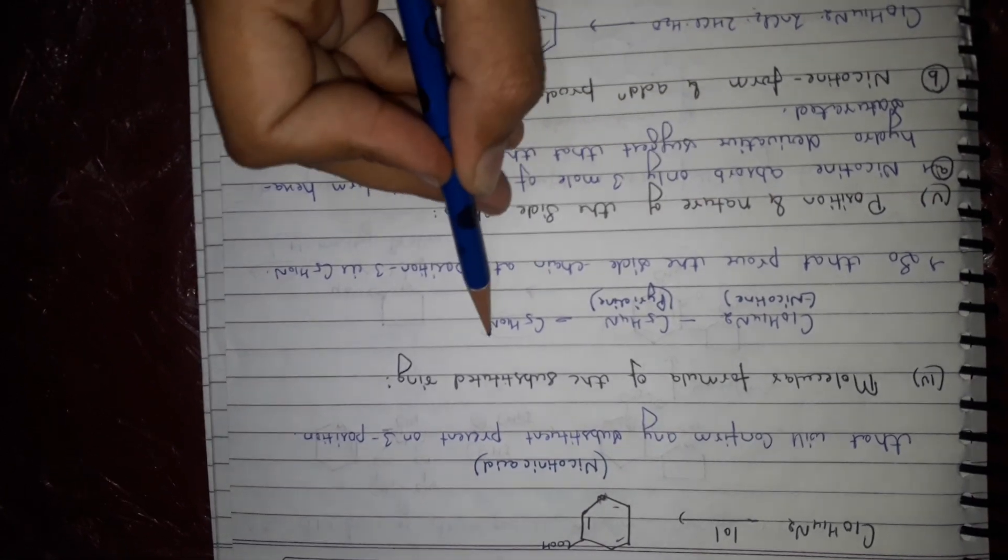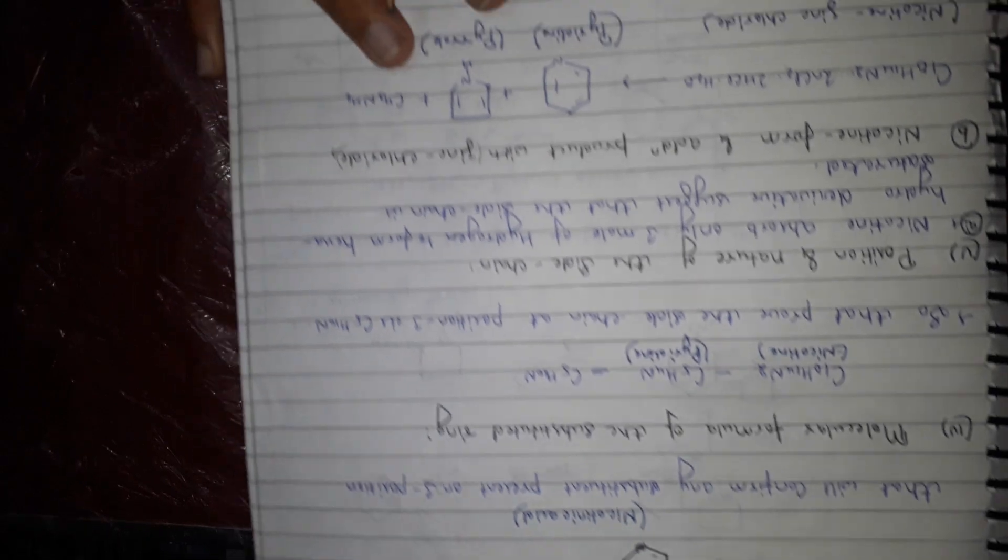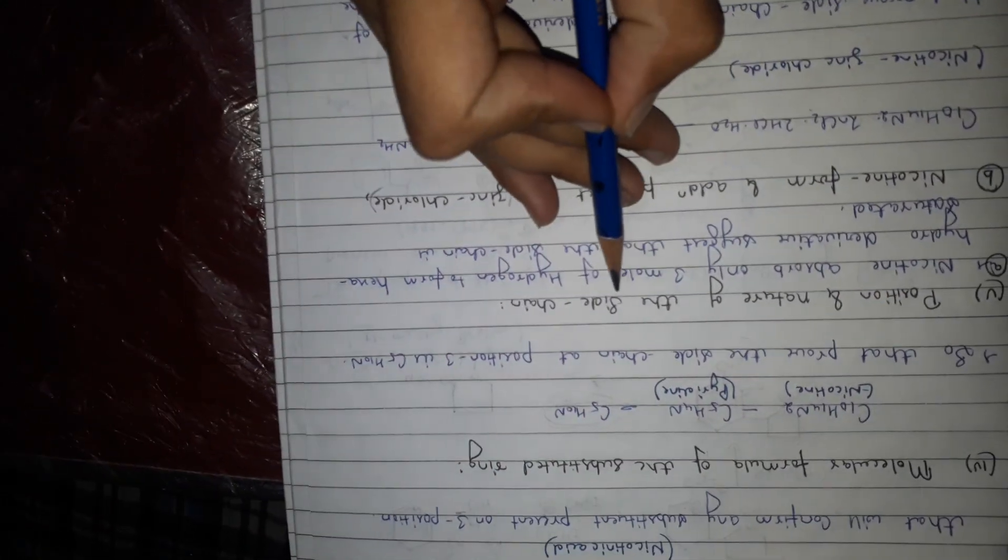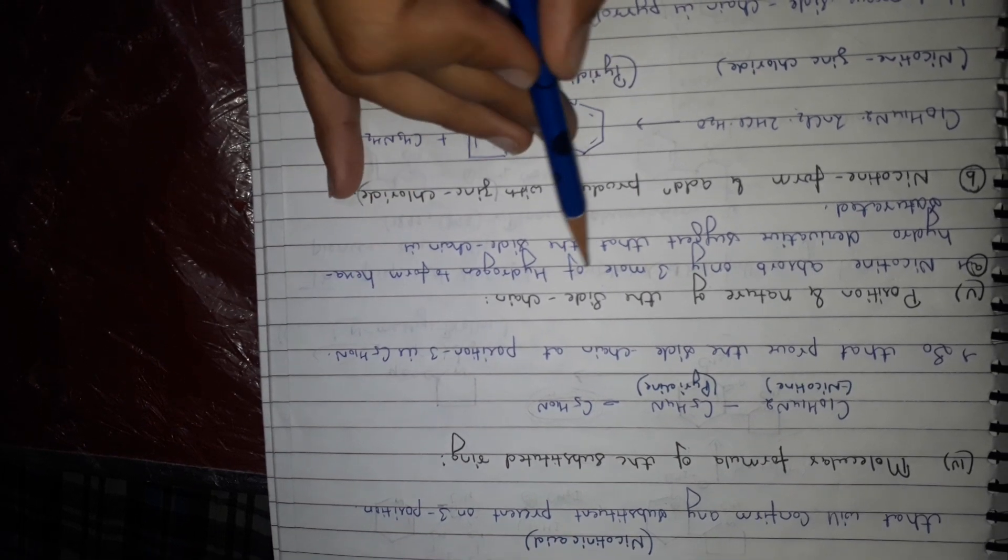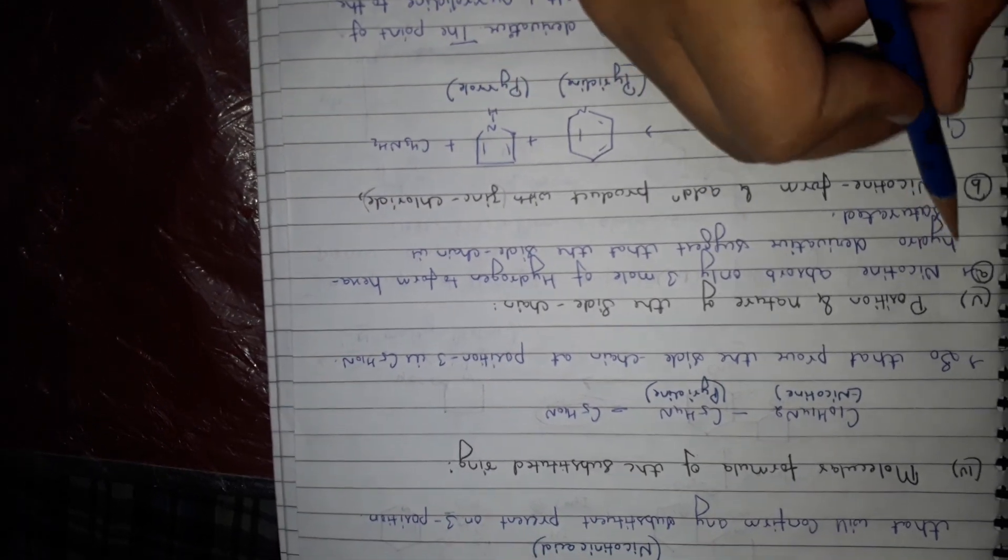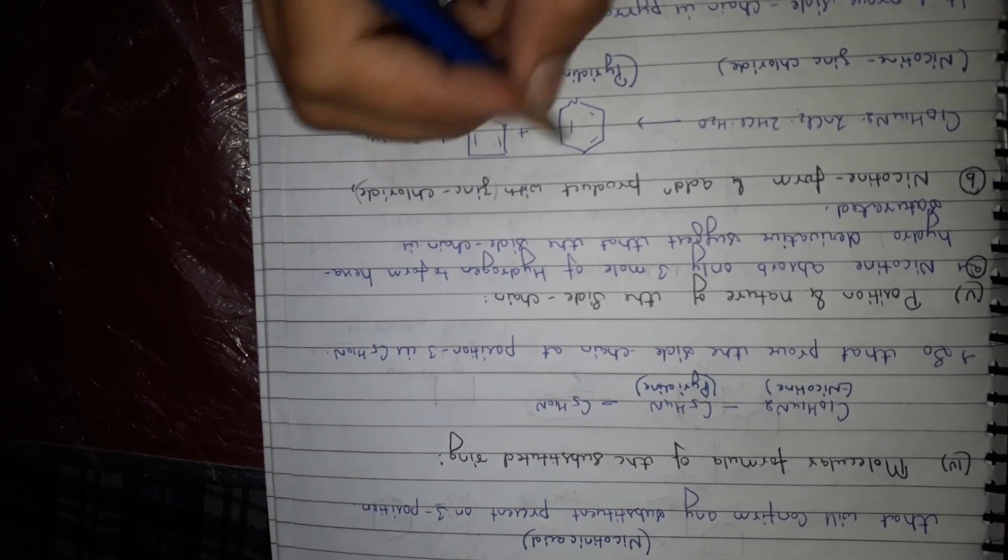Molecular formula, position and nature of the side chain. Nicotine absorbs three moles of hydrogen to form hexahydro derivative, which suggests that the side chain is saturated.